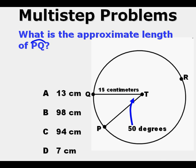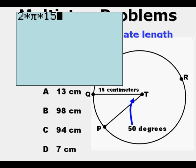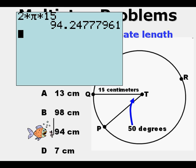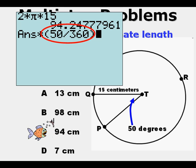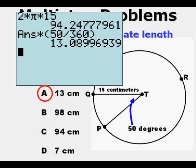Let's look at an example: what is the approximate length of arc PQ? We see an arc going from point P to point Q. Using the formula chart, circumference equals 2πr, so 2 times π times 15 equals about 94 centimeters. We then multiply 94 times the proportion 50 degrees out of 360 total to get 13. Notice that 94 is too long — it can't possibly be right. You have to pick answers that make sense.